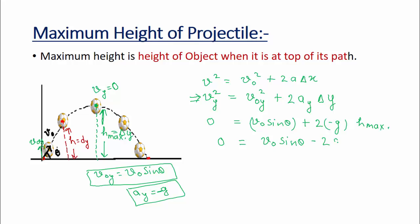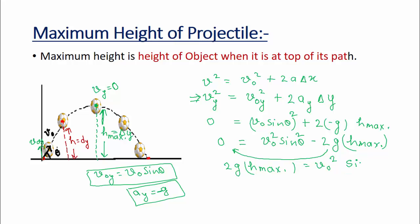Solving for H_max: 0 equals v₀²·sin²θ minus 2g·H_max. Rearranging gives maximum height equals v₀²·sin²θ divided by 2g. This is the formula for the maximum height of a projectile.